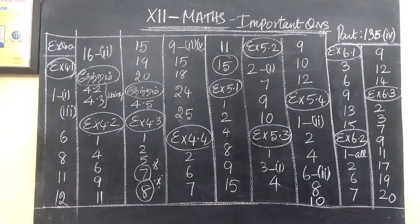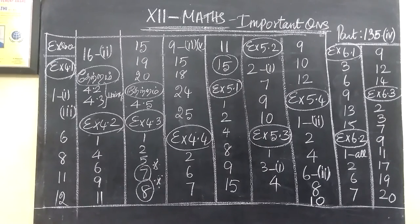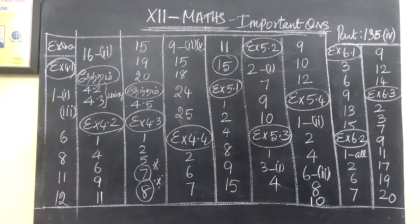Then exercise 4.3 is question number 1, 2, 5. 7 is more important, 8 is more important. Then question number 9 is the subdivision 2 and 5. Then 15, 18, 24, 25.